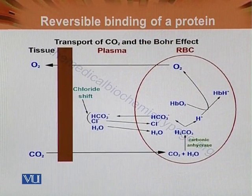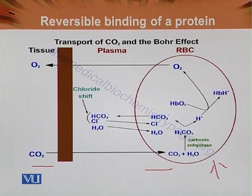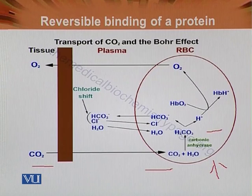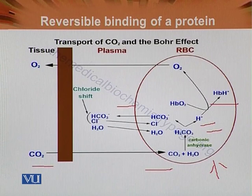This is the diagrammatic presentation of the Bohr effect. We can see that carbon dioxide is being produced from the tissue, which crosses into the RBCs. Inside the RBCs, carbon dioxide combines with water and ultimately forms carbonic acid. This carbonic acid spontaneously dissociates into bicarbonate and hydrogen ions. Bicarbonate exits the cell and chloride enters — this was discussed in detail in the previous module. The hydrogen ions are taken up by hemoglobin and transported.